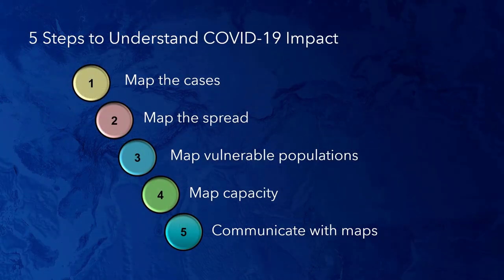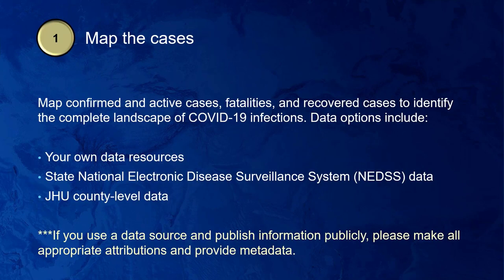Let me start getting more specific and dig into those five steps. They offer a real evidence-based way to make decisions as we go through this crisis. Step one is to map the cases — confirmed cases, active cases, fatalities, and recovered cases — to get the overview you need to understand the current situation. Where do you get the data? Ideally, if you're working for county public health, you may have case-level data with detailed address information ideal for internal analysis. Failing that, I recommend getting data from the state's NEDSS system — the National Electronic Disease Surveillance System.